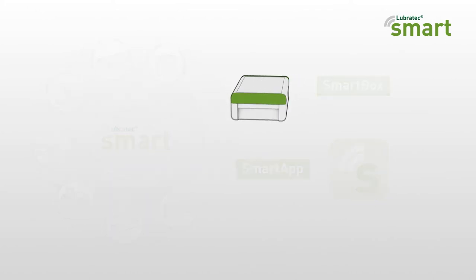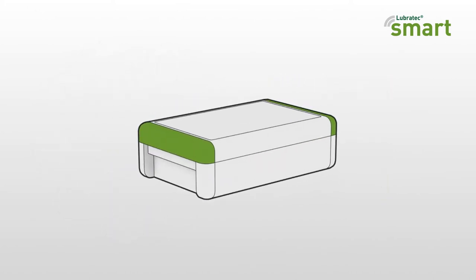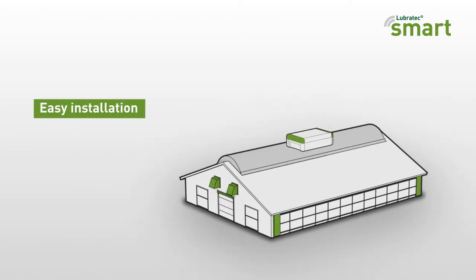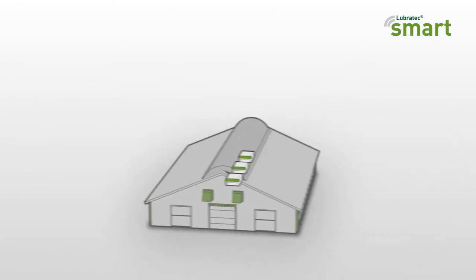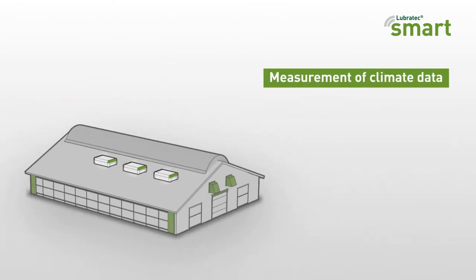The Smart Box is positioned as a measuring instrument in the climate-relevant locations in your barn. It measures barn climate data 24 hours a day.